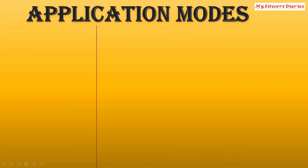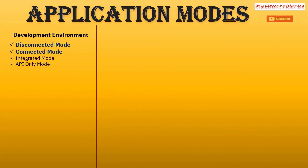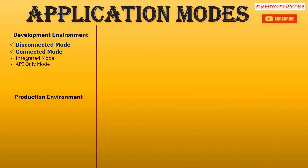So let's see the JSS application modes. These modes are used in different environments — development and production. In the development environment you can have disconnected mode, connected mode, integrated mode, and API-only mode. We will see each mode in detail. I am just highlighting what modes are used where — for the development environment: disconnected mode, connected mode, integrated mode, and API-only mode.